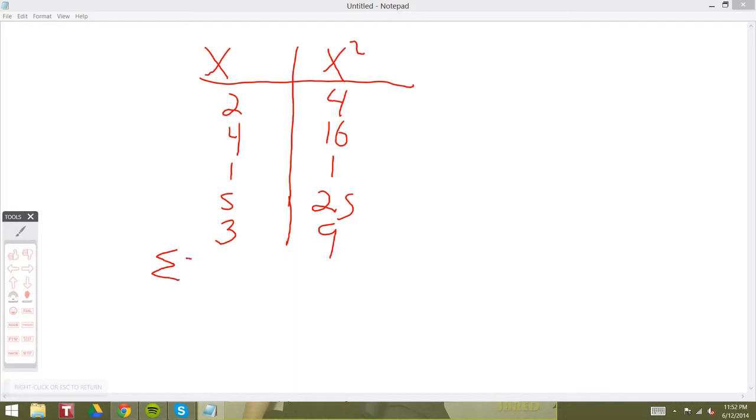The next step is to add up all of our x terms and all of our x squared terms. When we do that, we get 15 for the sum of our x values, and for our x squared terms we get 55.